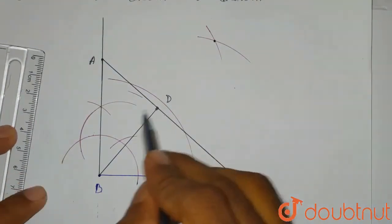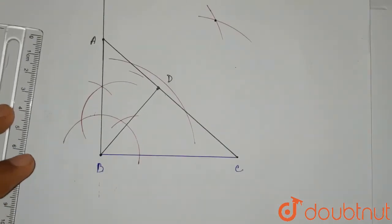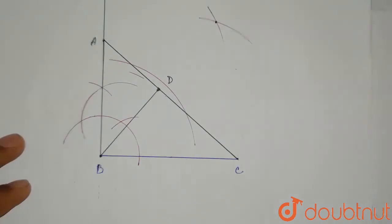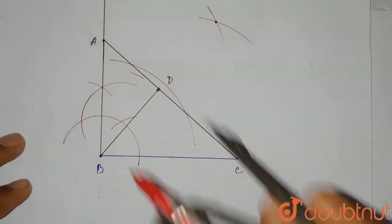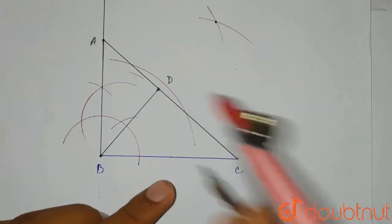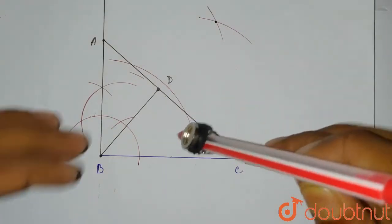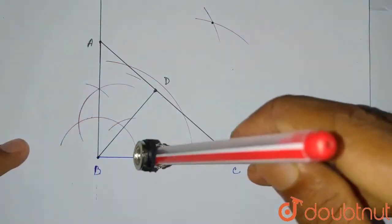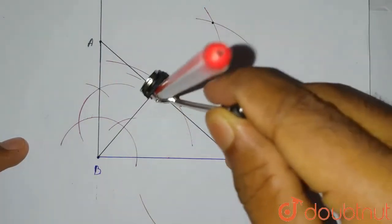Now we have to draw the circumcircle of triangle BCD. Since it is a circumcircle, the circle will connect points B, C, and D. Since it connects B and C, we can take the midpoint of BC by drawing the perpendicular bisector of BC. We take a length greater than BC and draw an arc.